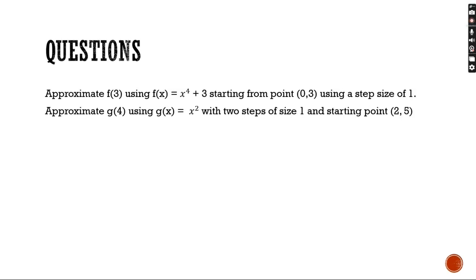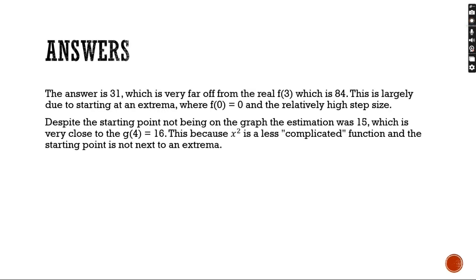Our second question is, approximate g of 4 using the function g of x equals x squared with two steps of size 1 and on the starting point 2, 5. Notice, the starting point is not on the graph, but despite that, the estimation was 15, which is very close to the real g of 4 value of 16. This is because x squared is a less complicated function, and the starting point was not next to an extrema.